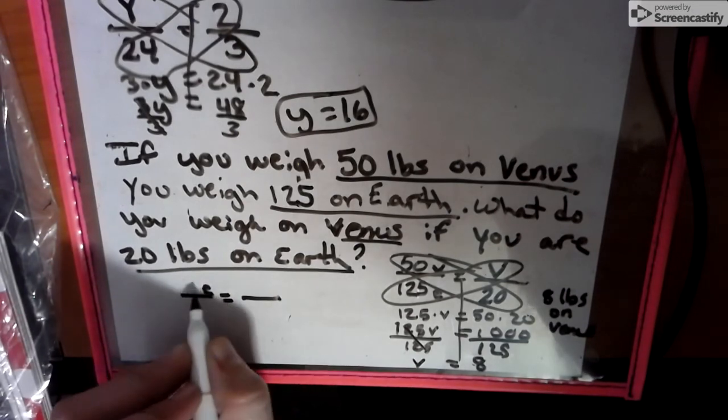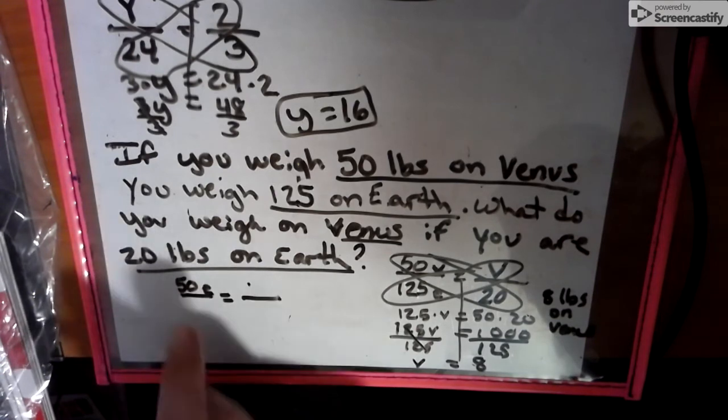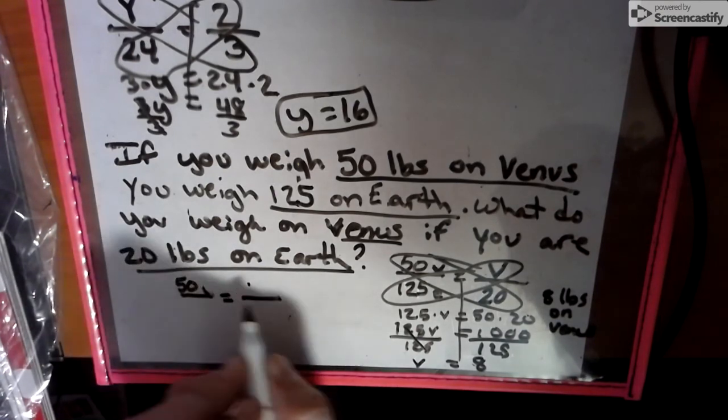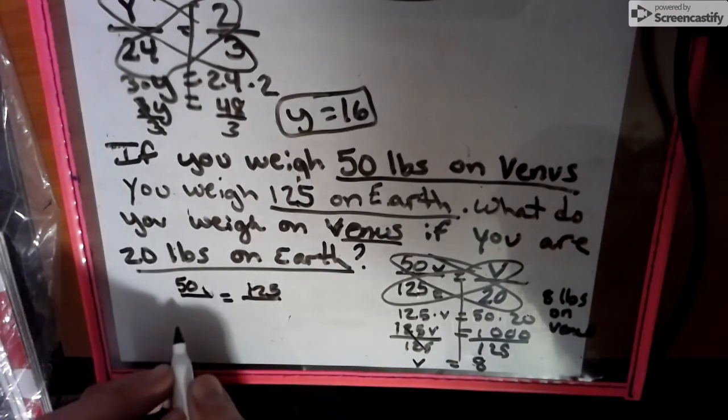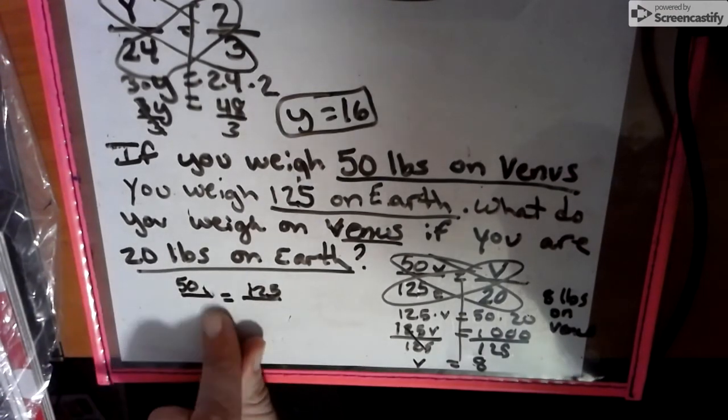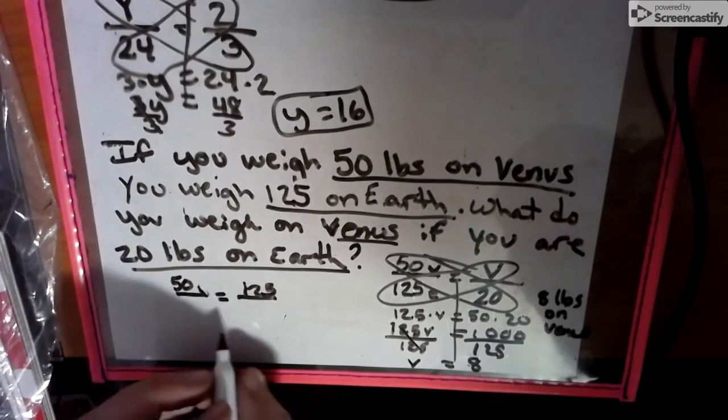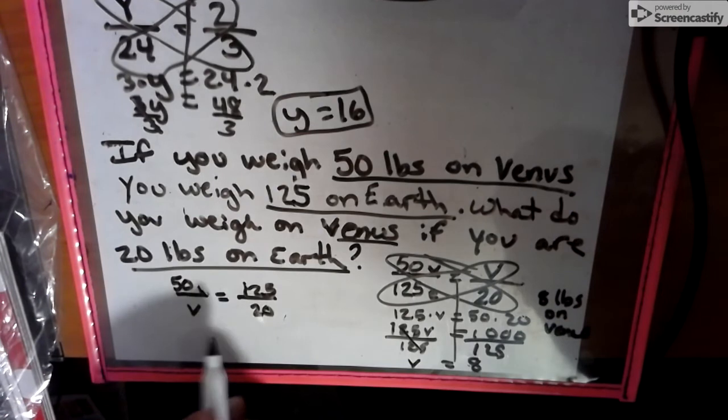The 50 Venus is to the 125 Earth. See, like this, as the 20 pounds, the missing Venus is to the 20 pounds. So, Venus, Earth, Venus, Earth.